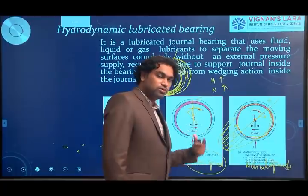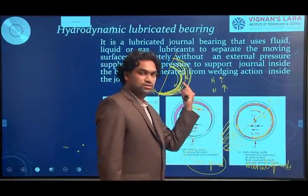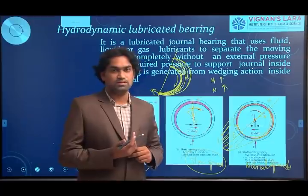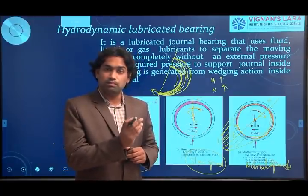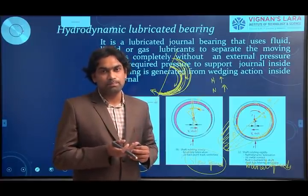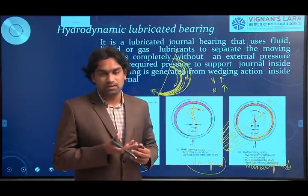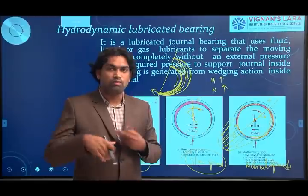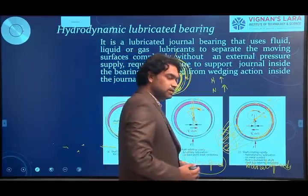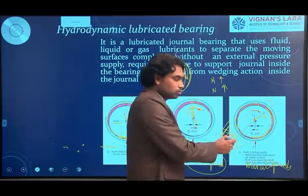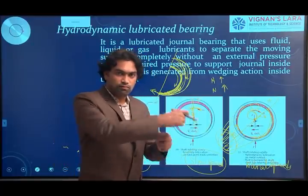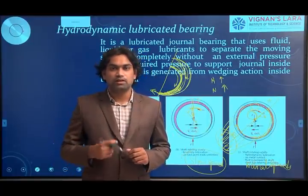At higher speeds, the shaft creates a convergent zone. Whenever the fluid passes through the convergent zone, that increases the fluid pressure between the two surfaces. That pressure — whatever builds up in the lubricating oil — is enough to levitate the shaft inside the bearing clearance. The shaft levitates along with the supported load acting on it, and the pressure build up between the bearing surfaces is enough to support the shaft along with the load, forming a thick layer of lubricant between the two surfaces.